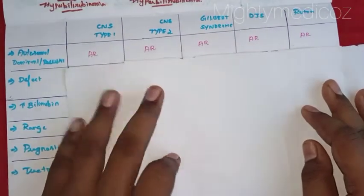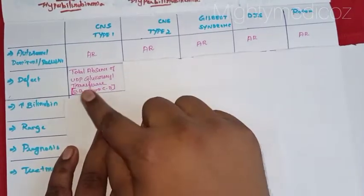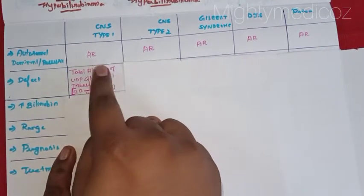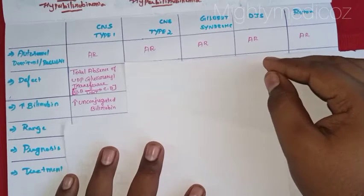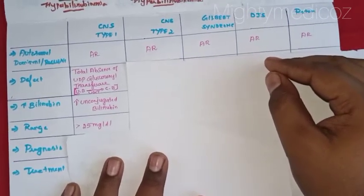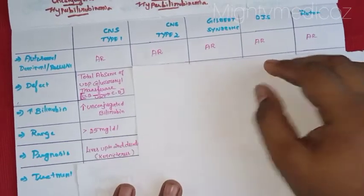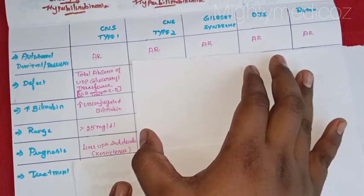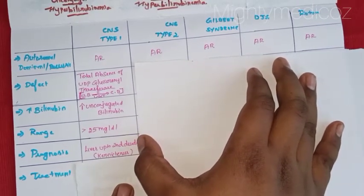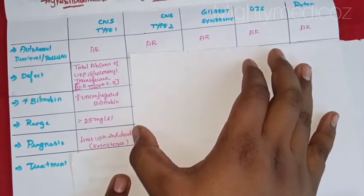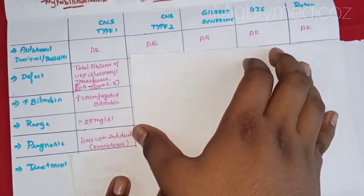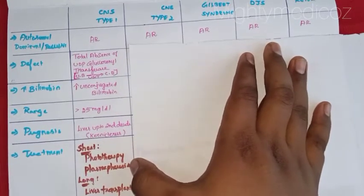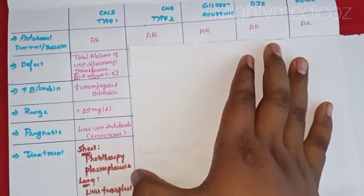Crigler-Najjar syndrome type 1: there is a total absence of the UDP Glucuronosyltransferase (UGT) enzyme. Bilirubin levels can reach 25 mg per deciliter. If it goes to the brain, it causes kernicterus. Patients may survive into the second decade with a liver transplant, and life expectancy is around 20 years. The definitive treatment is liver transplantation. For short-term treatment, phototherapy and plasmapheresis can be done.